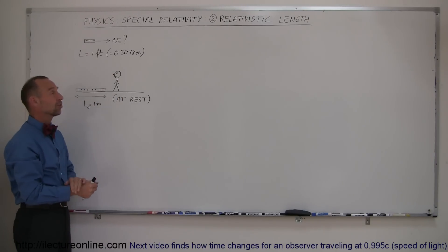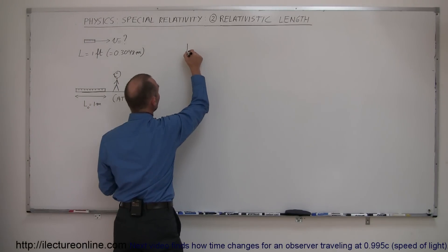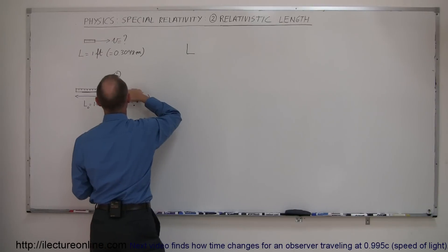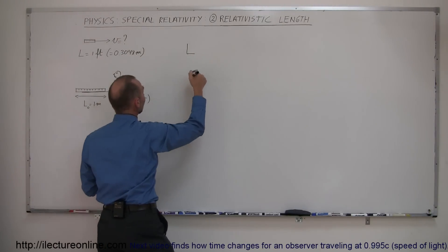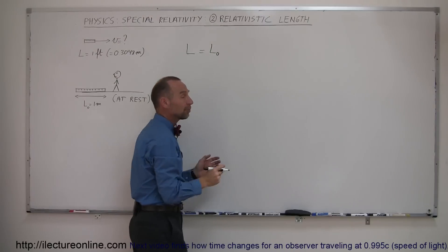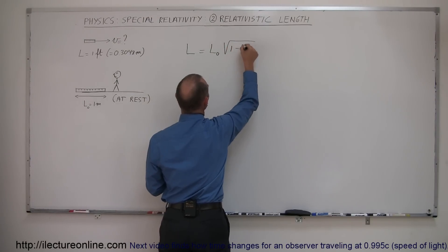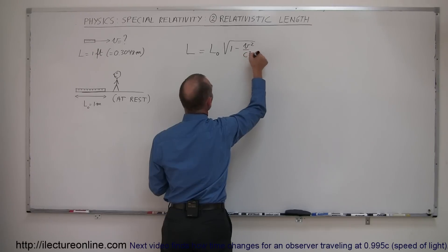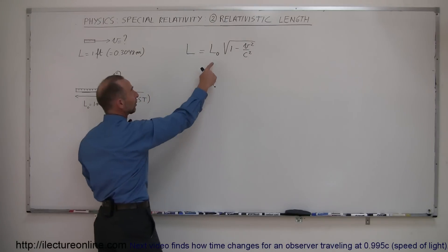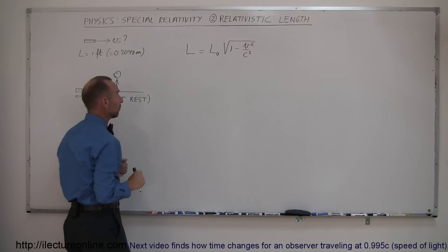So how fast is the meter stick moving? The equation we need is that the length observed — as seen by a person at rest looking at something moving by very fast — is equal to L₀, which is the length of the object at rest, times the square root of 1 minus v squared over c squared. We want to find v when the rest length is one meter and the observed length is one foot.